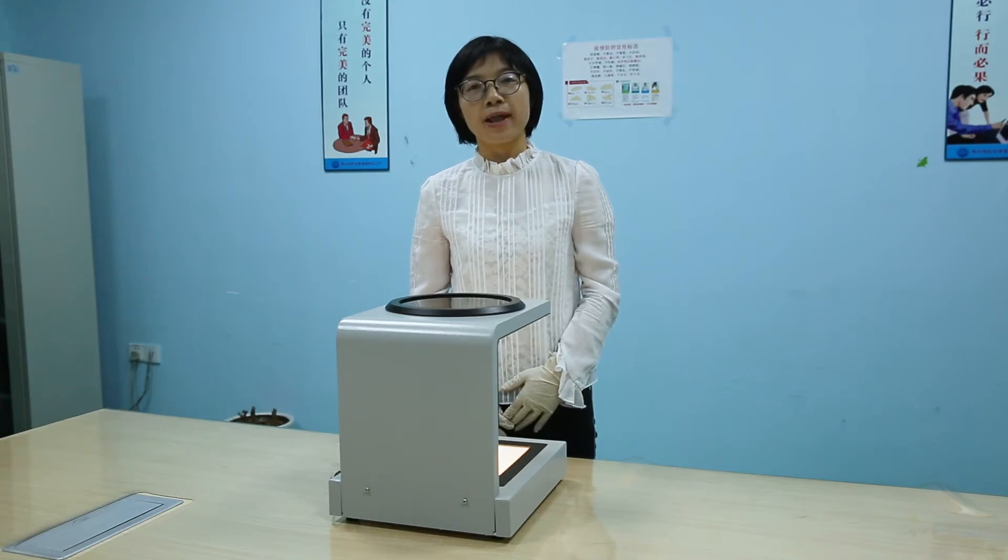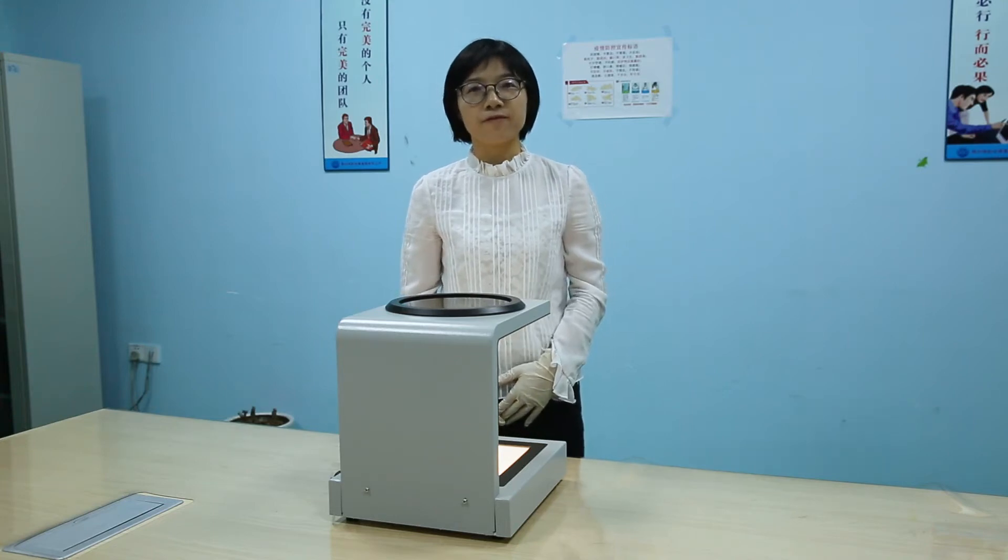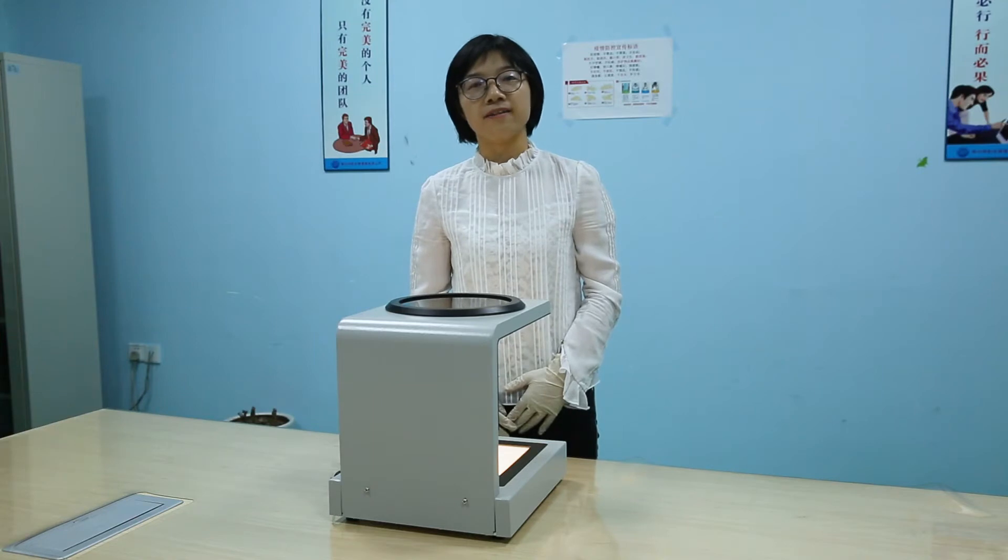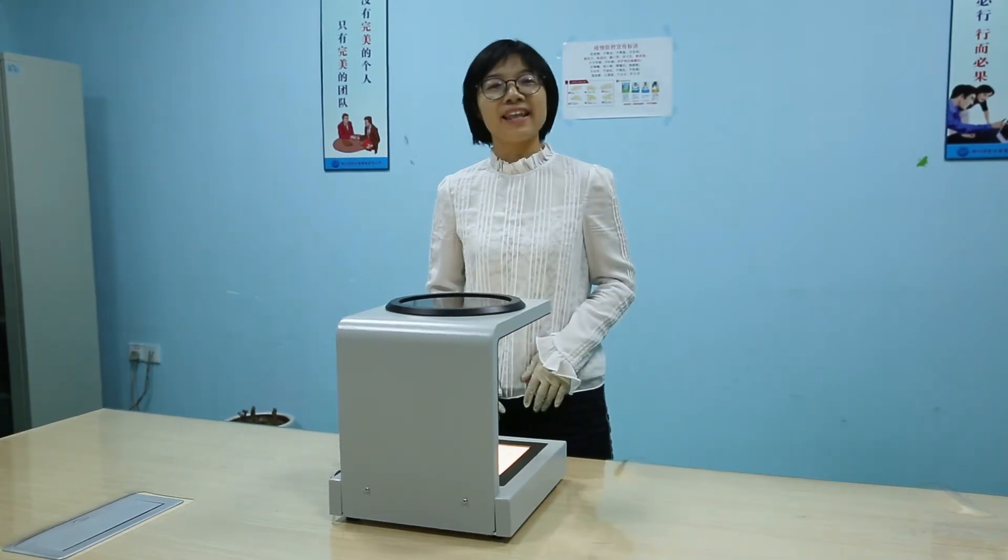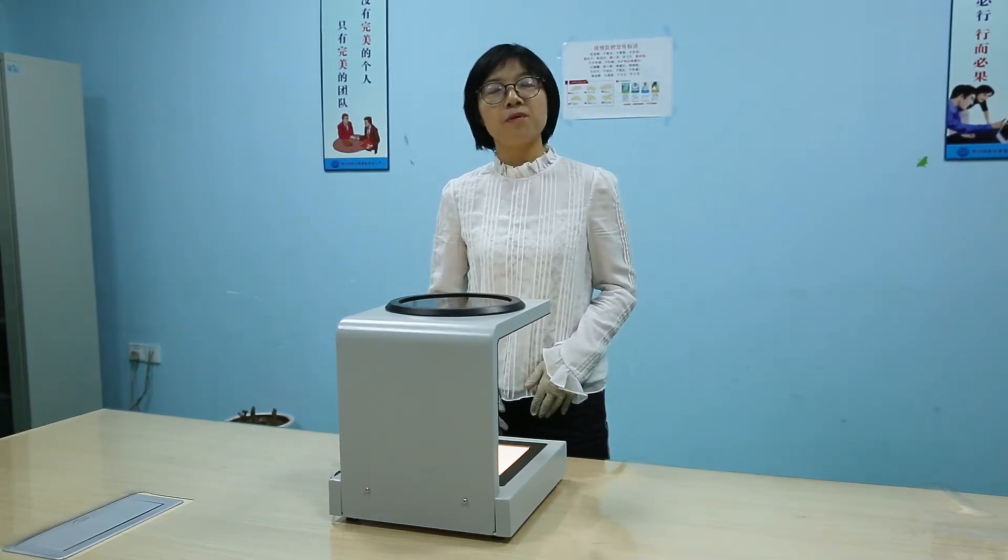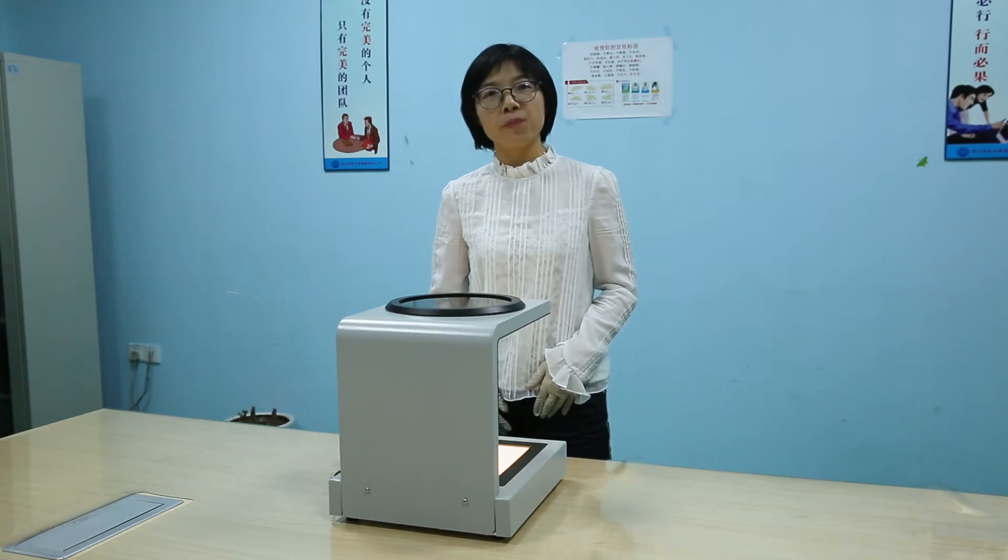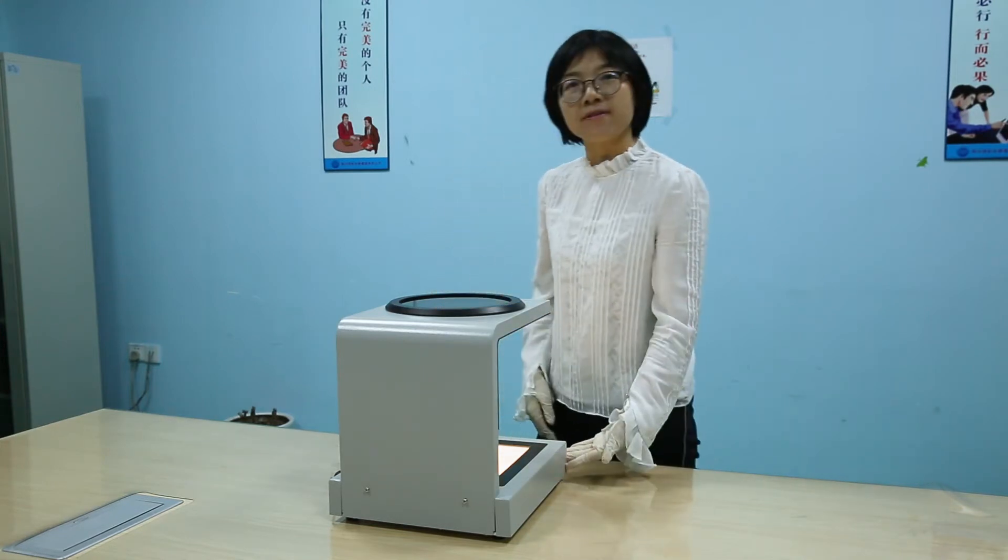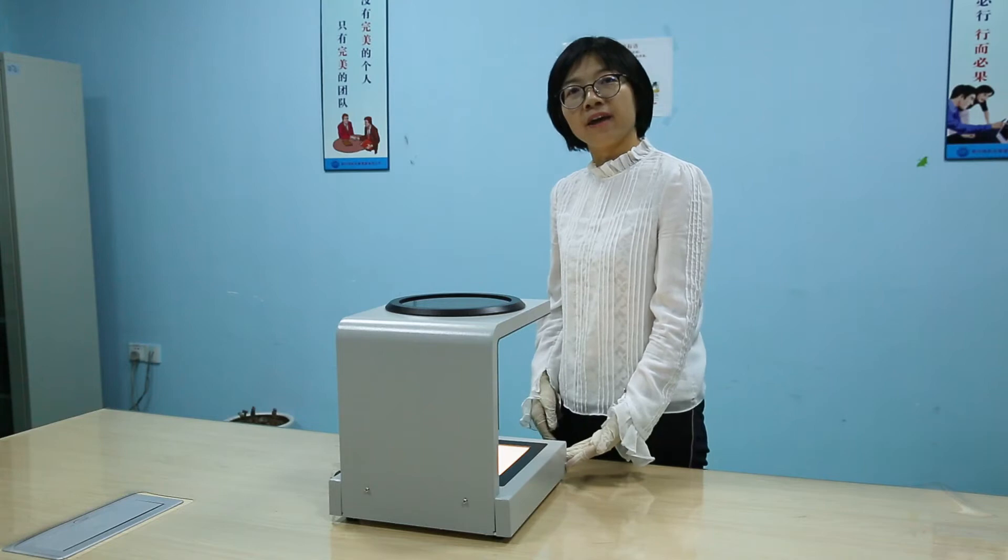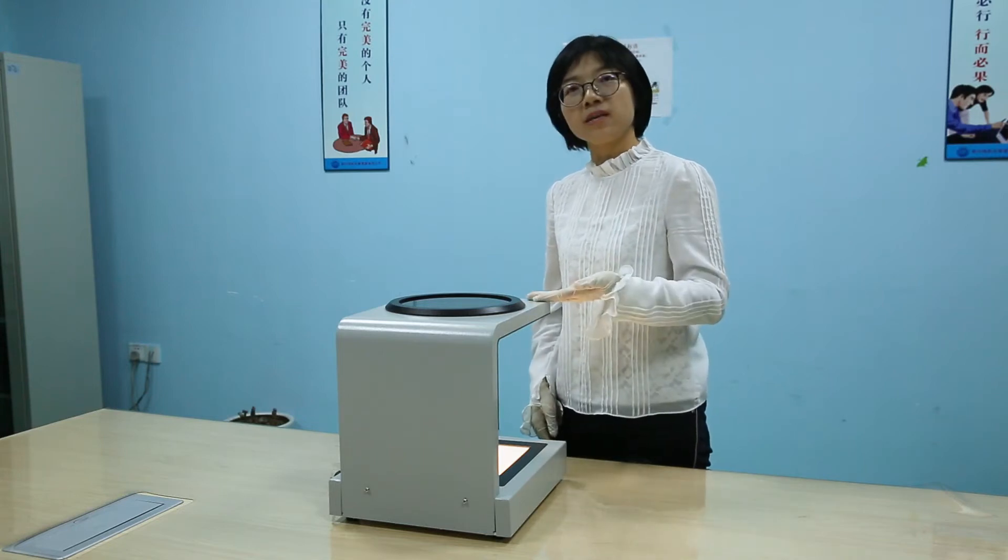This new type of pluriscope is specially designed for plastic bottles and containers. Let's have a look. This new type of pluriscope is made of two parts. On the bottom, there is a polarizer. And on the top, we see the analyzer.